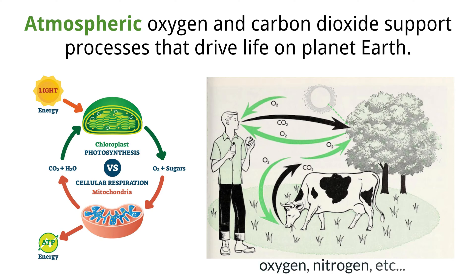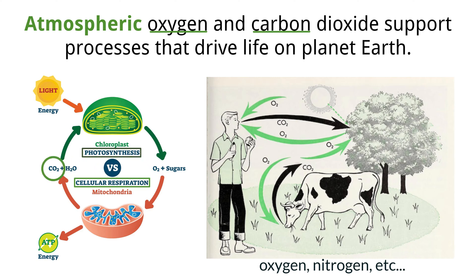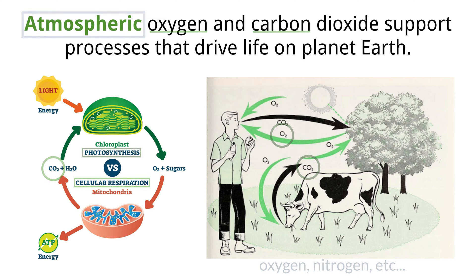Looking closer at oxygen and carbon, there is an important relationship in how they cycle between photosynthesis and cell respiration. Photosynthesis needs carbon dioxide as a reactant and produces oxygen as a product, while cell respiration needs oxygen as a reactant and generates carbon dioxide as a product. These two processes support each other, with the atmosphere acting as a middleman for both oxygen and carbon — not to mention the carbon found within glucose that also plays a very important role in connecting these processes. This is why we could not survive without plants, as they provide the oxygen we breathe.